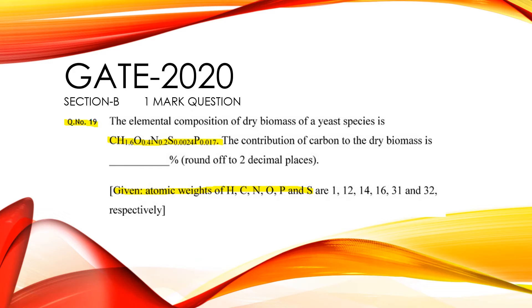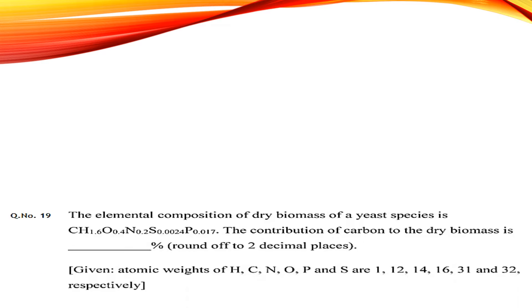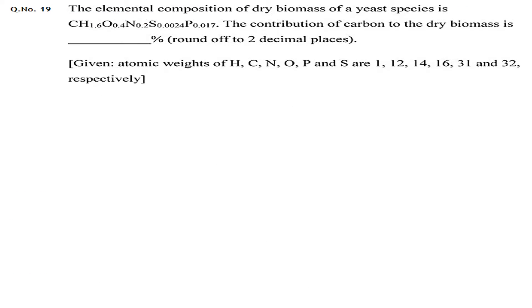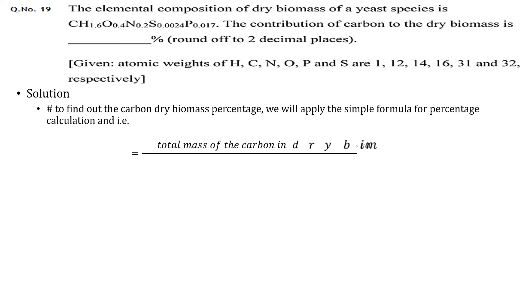Let's try to solve this question. The answer to this question is straightforward, and that is why it is a one-mark question. Now to find out the carbon dry biomass percentage, we will apply the simple formula for percentage calculation. And that is the total mass of carbon in dry biomass divided by the total mass of all elements in the dry biomass into 100.